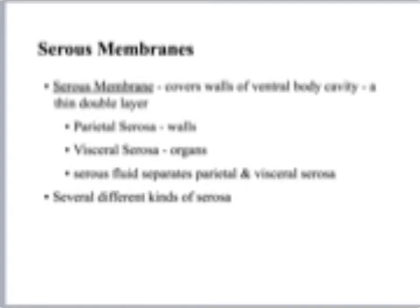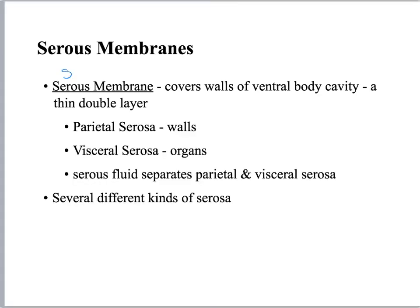Now we're going to quickly talk about serous membranes, because we are talking about body cavities and it's going to be coming up. You'll get more into this as you start doing histology, so this is just a preview. Serous membrane, also called serosa, is found in the ventral body cavity and it is a thin double layer of tissue. All membranes consist of two things: an epithelium, which we'll talk more about in the next lecture, and a layer of connective tissue — typically areolar, but sometimes reticular.